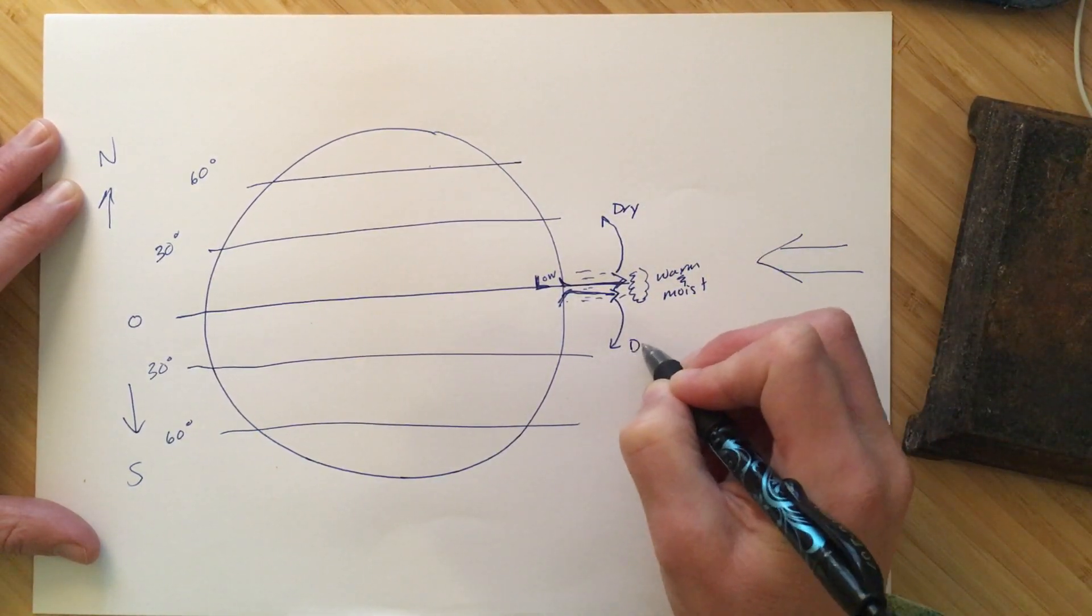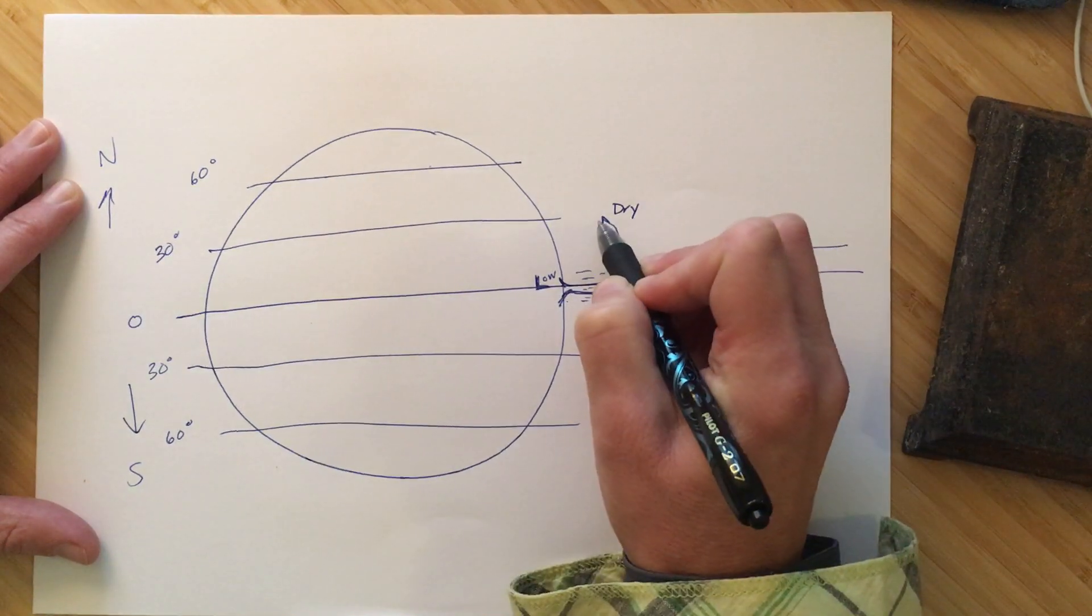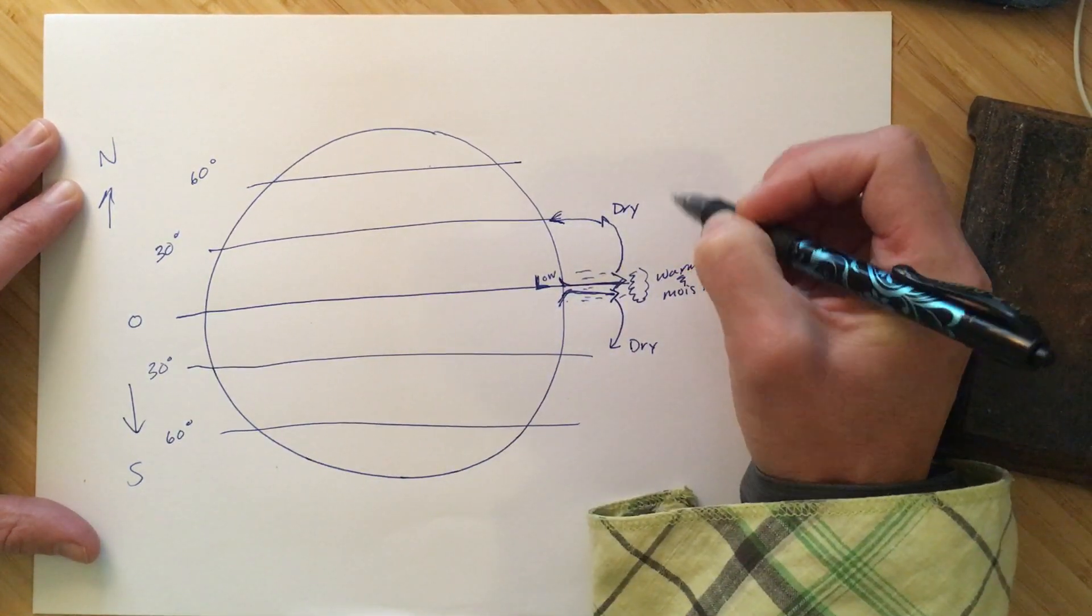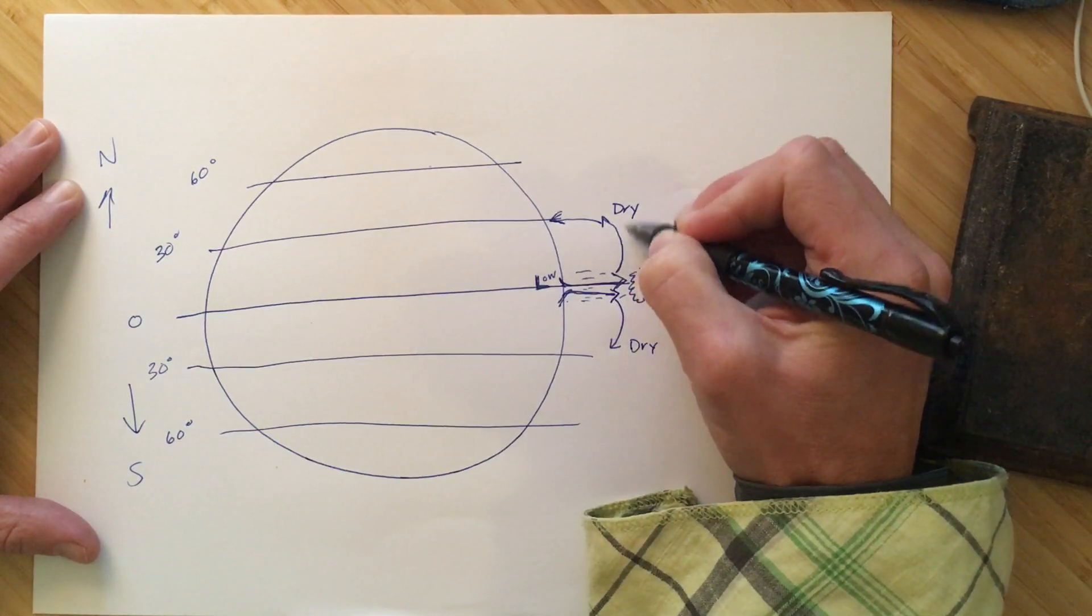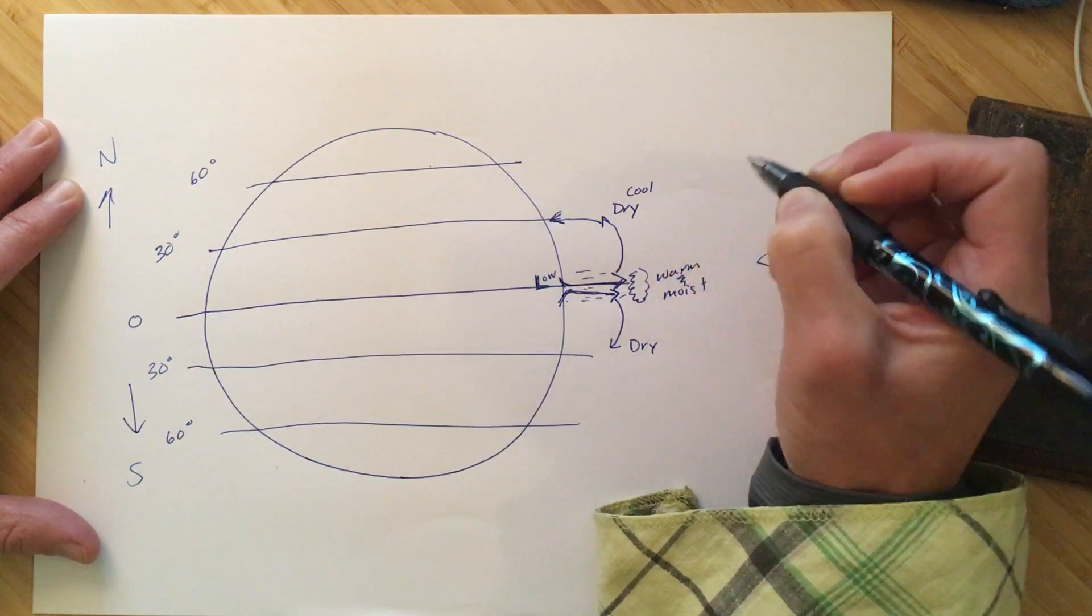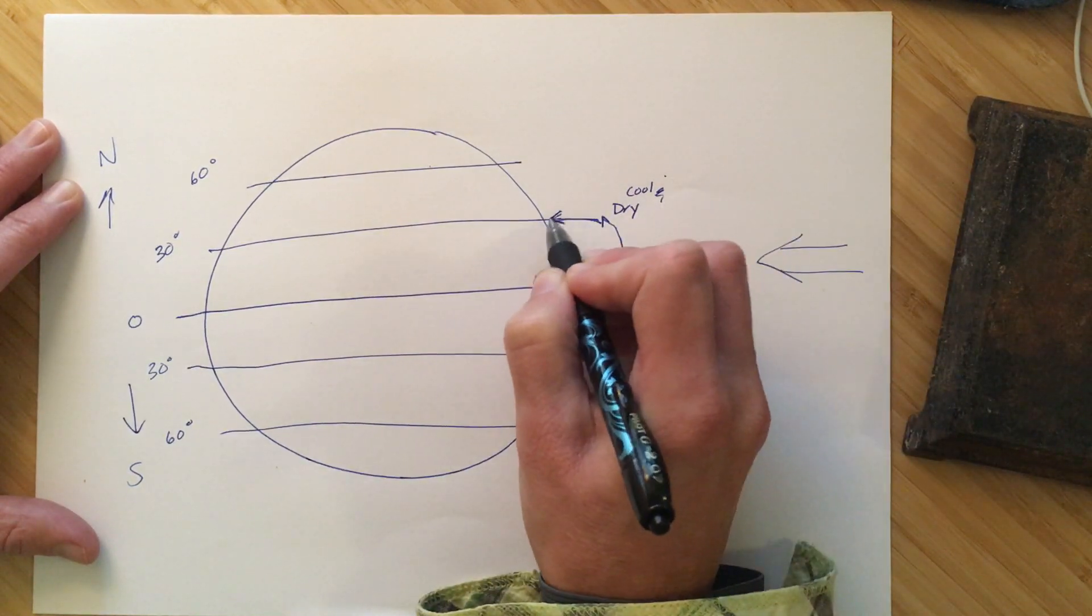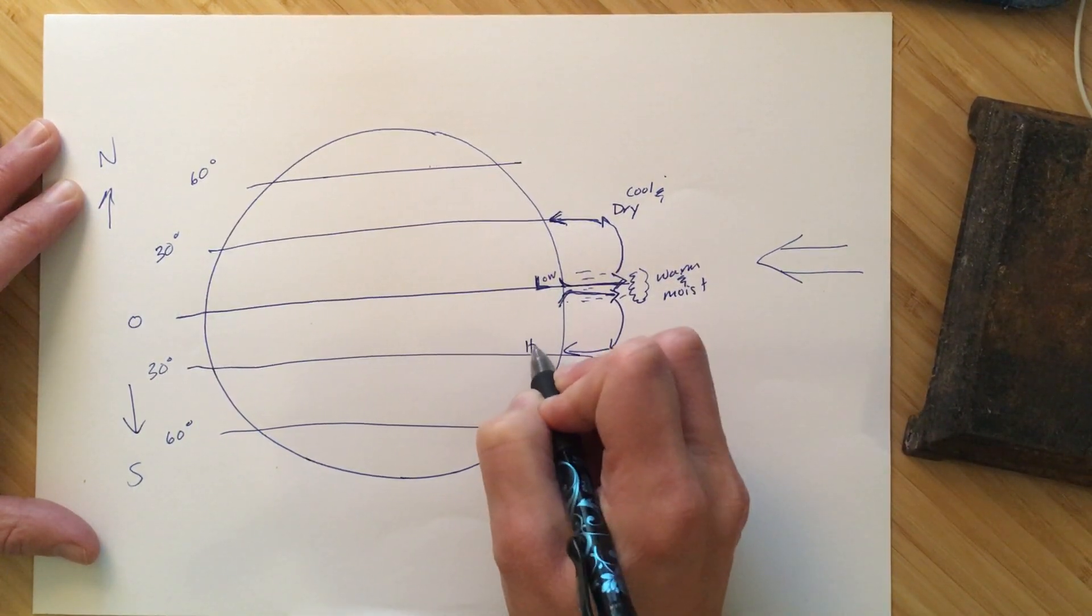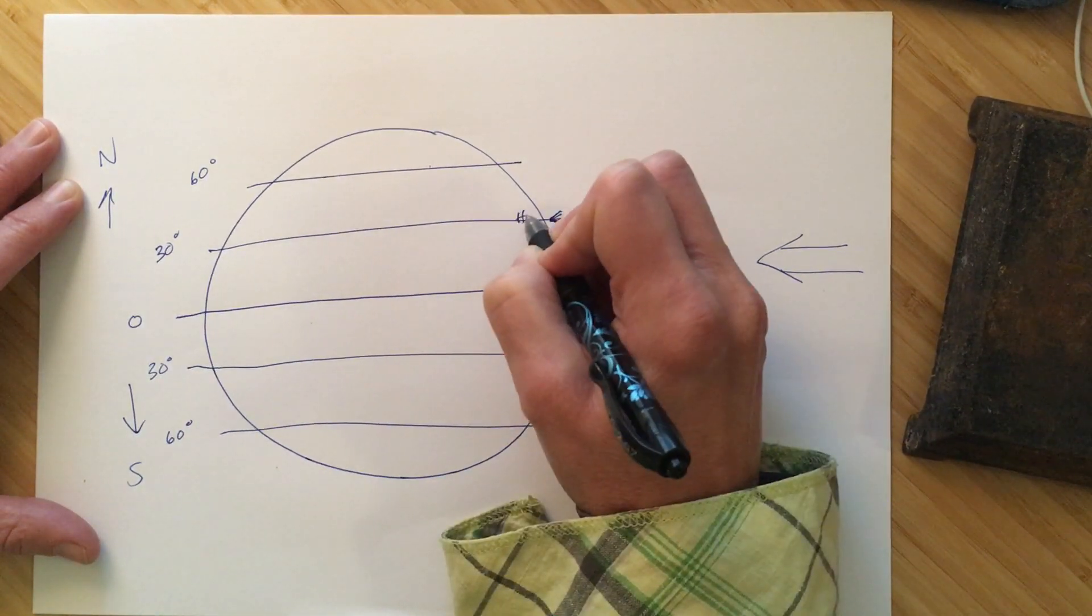And that dry air is going to descend down at 30 degrees. And this is actually cool dry air at this point because it's much cooler at the higher altitude, so this is cool dry air. So cool and dry. And that's descending down at 30 degrees, okay? And that's going to create a high pressure system here.